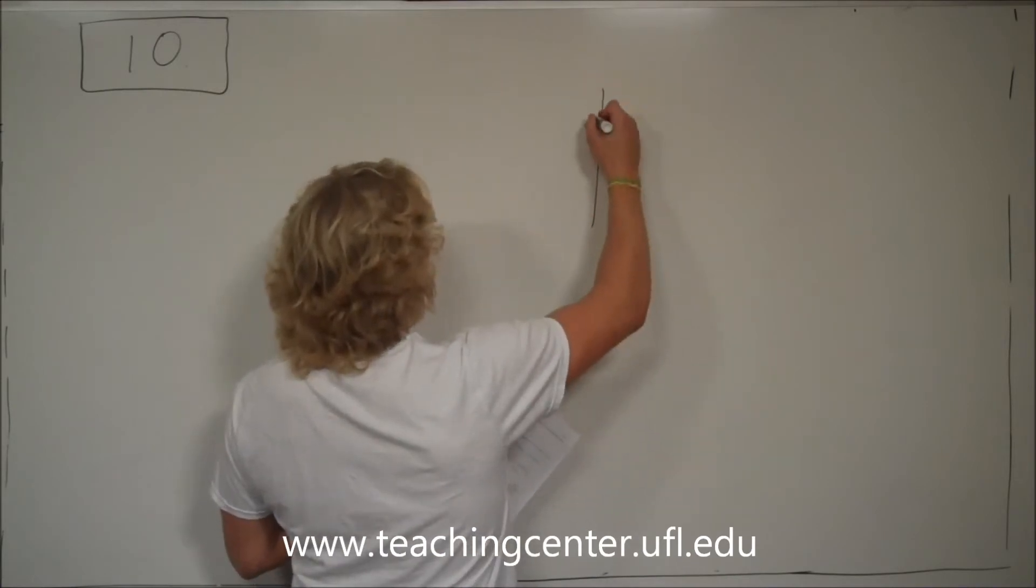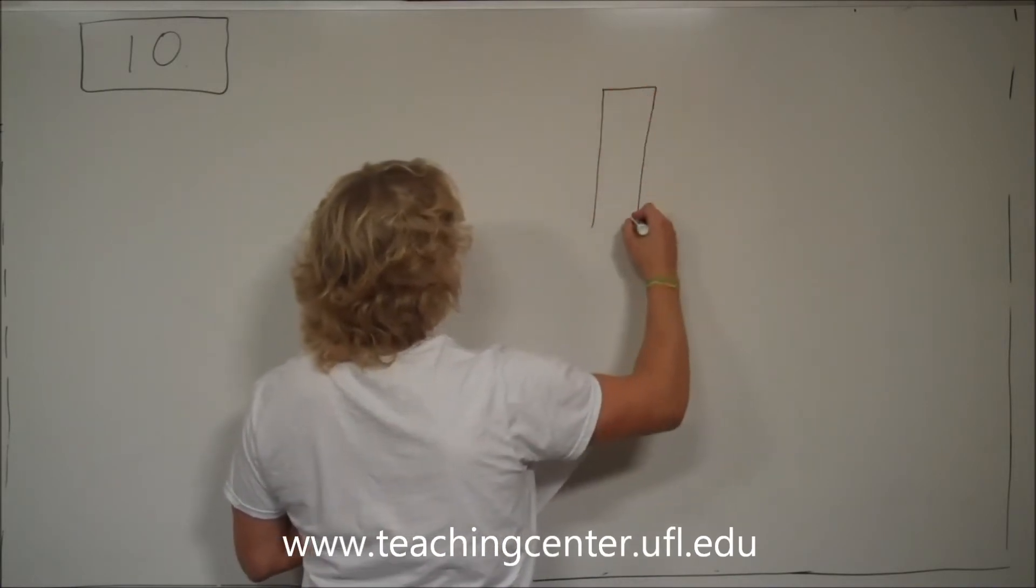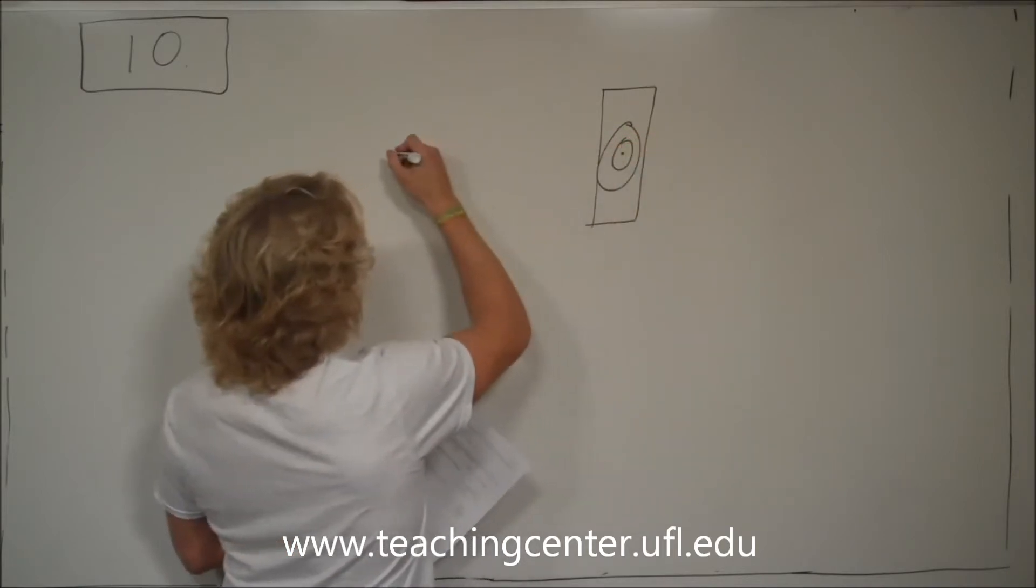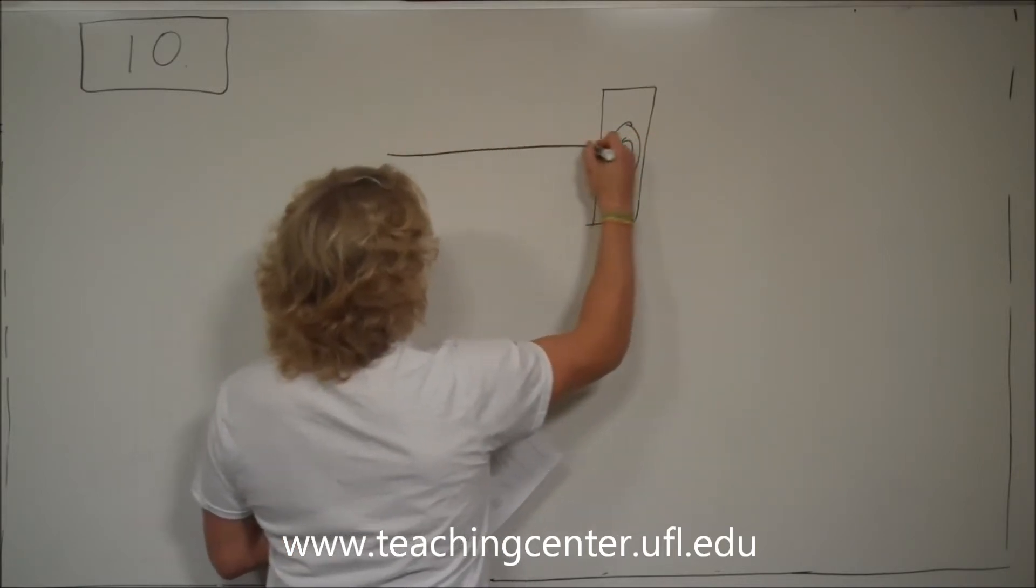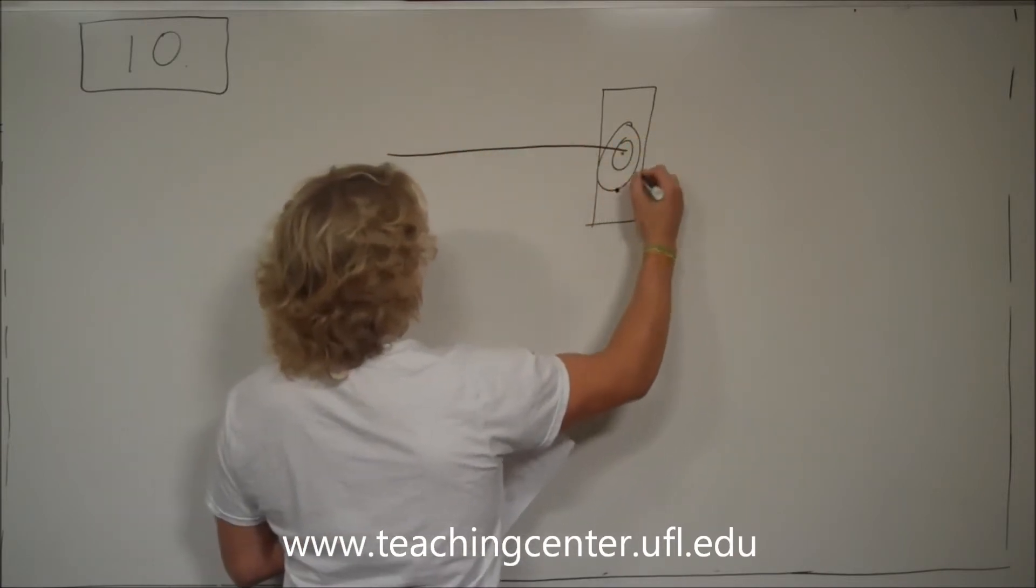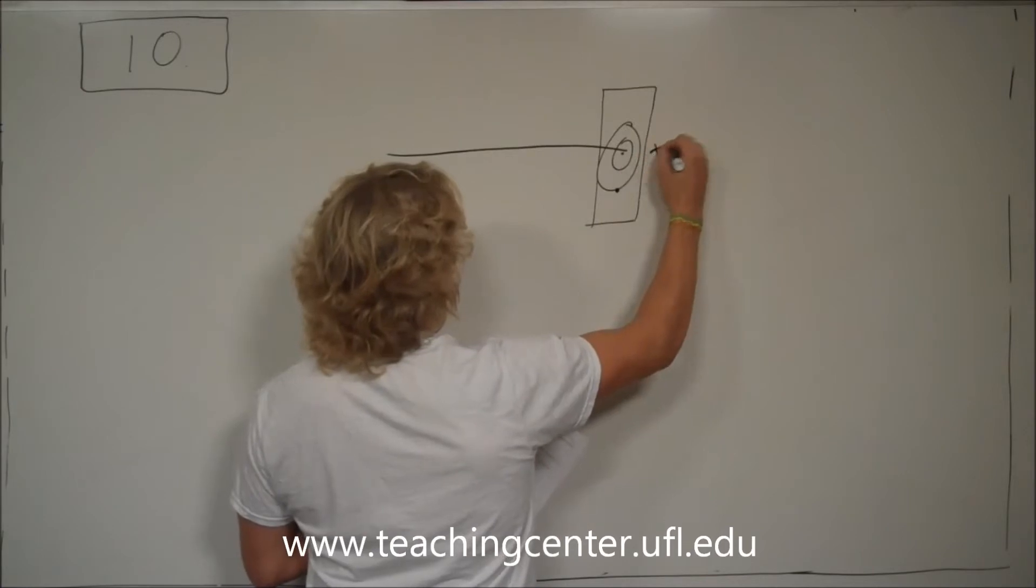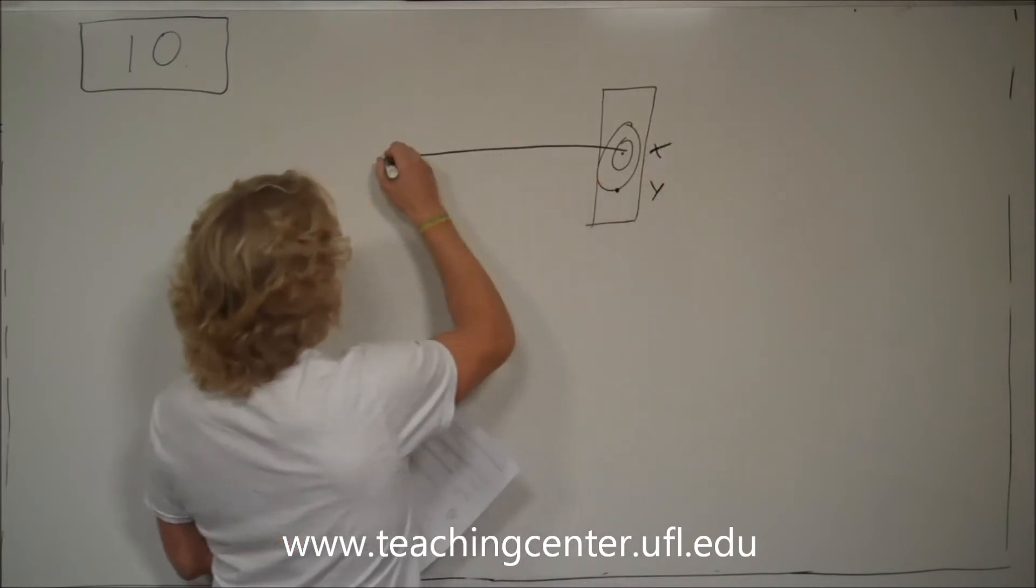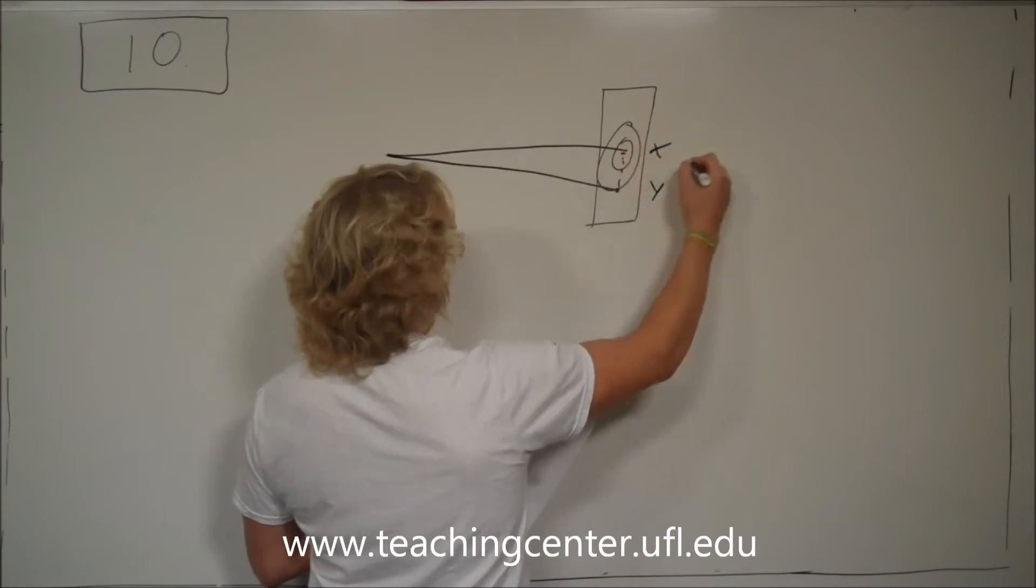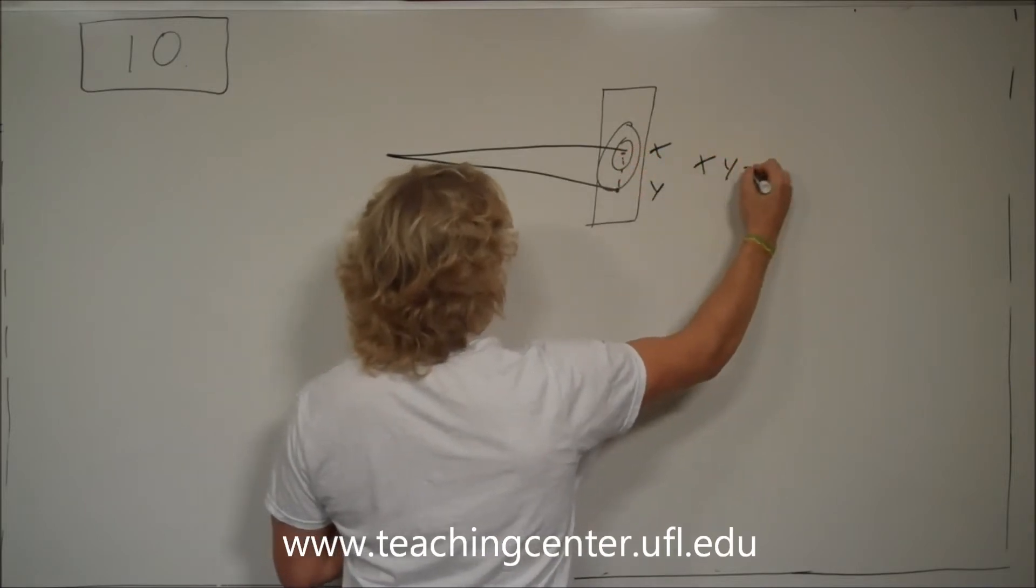where you have a dart board, and you're aiming for the middle, but it hits at point y. This is point x, and this is point y, and it actually hits at point y. So you're looking for x-y is equal to what?